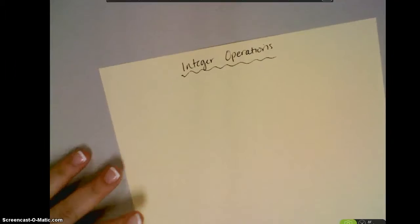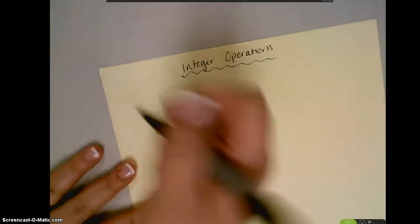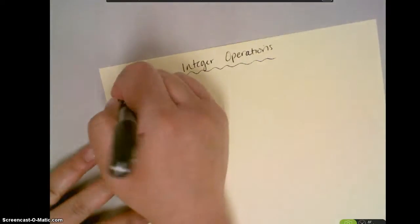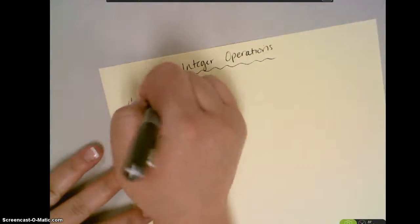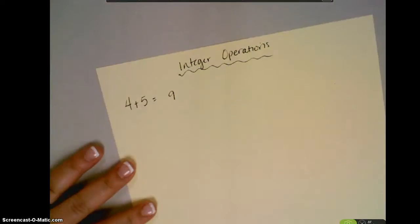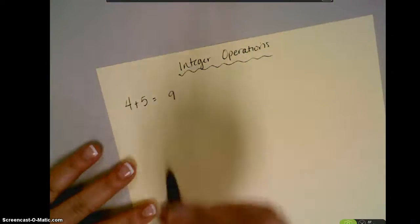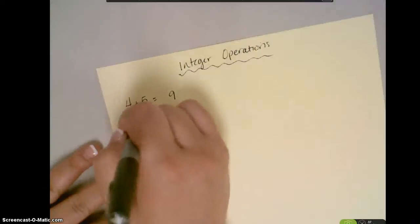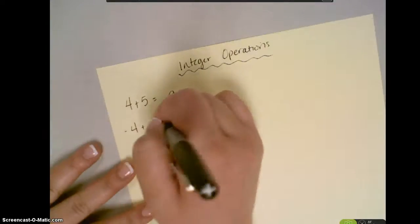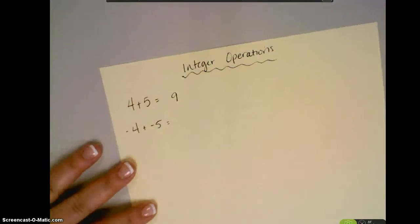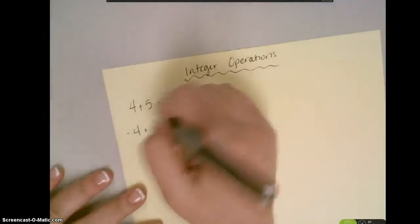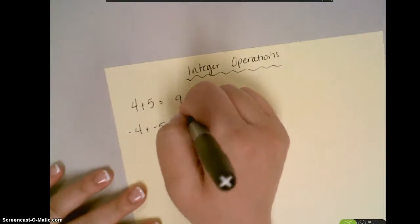We will start with adding because that's easier. The rules for adding: if the signs are the same — so if they're both positive, then my answer is just going to be positive. If both numbers are negative integers, so negative 4 plus negative 5, then I'm just going to add them and the answer is going to be negative. So, this will be negative 9.